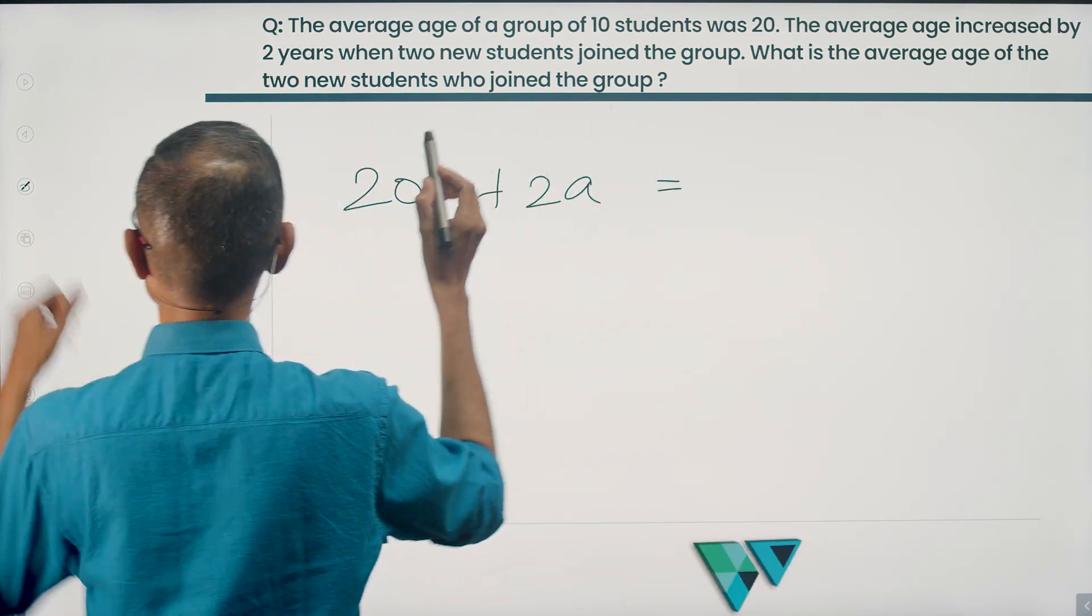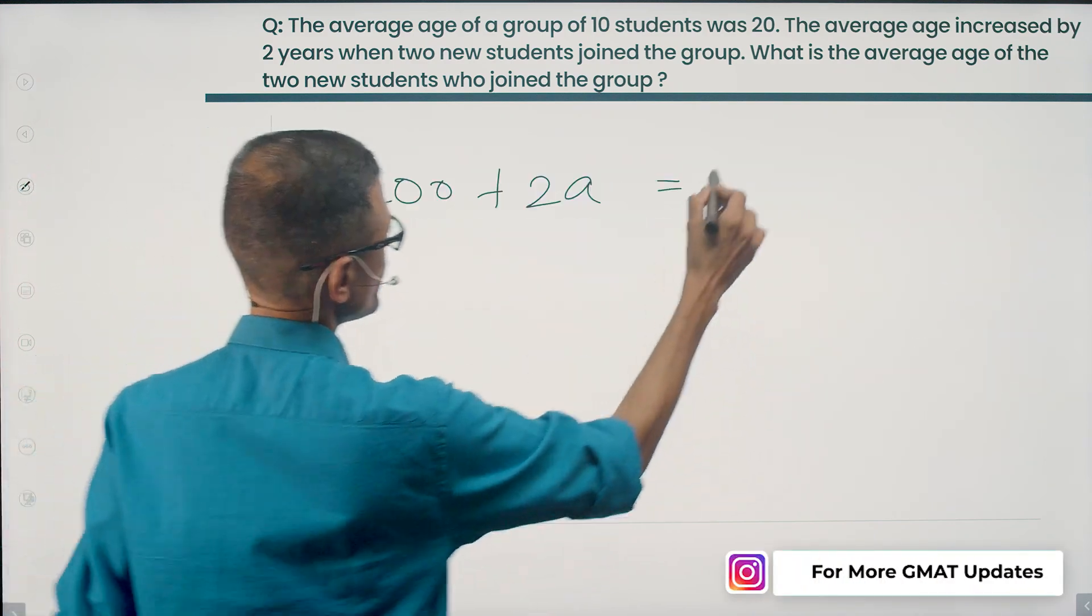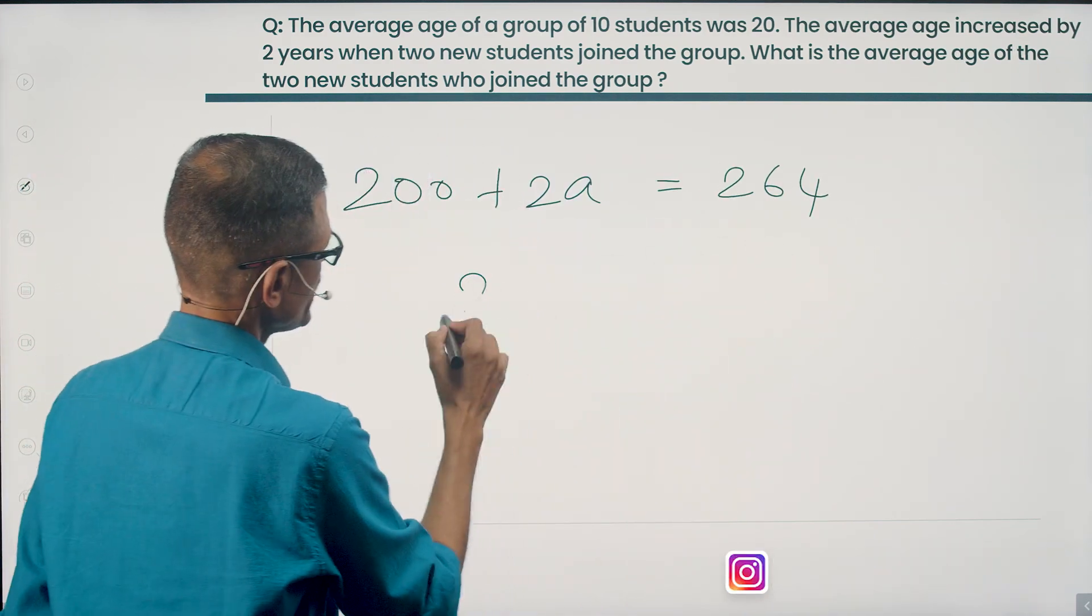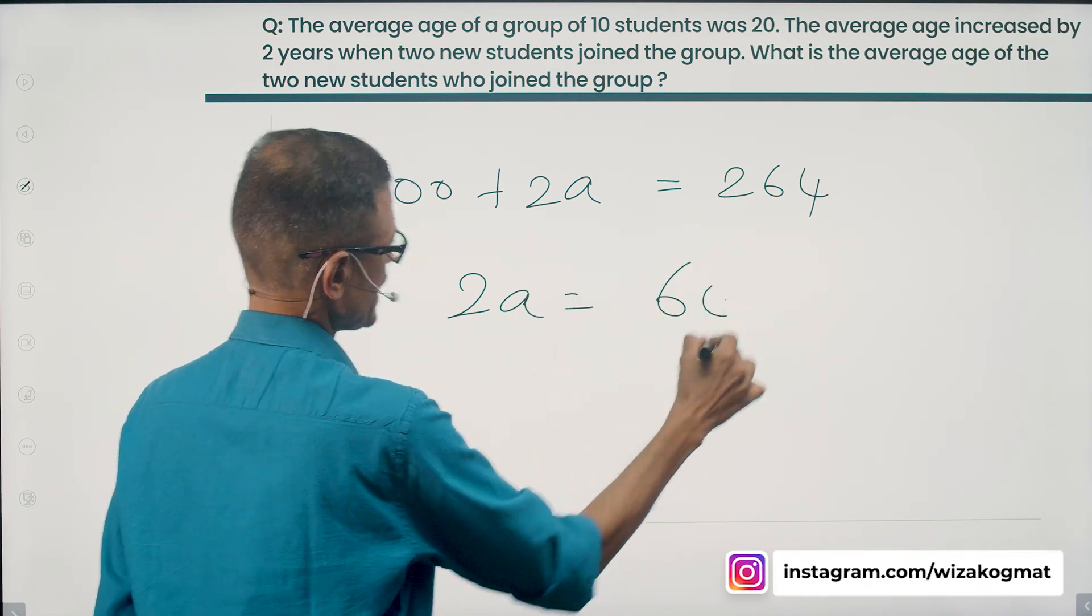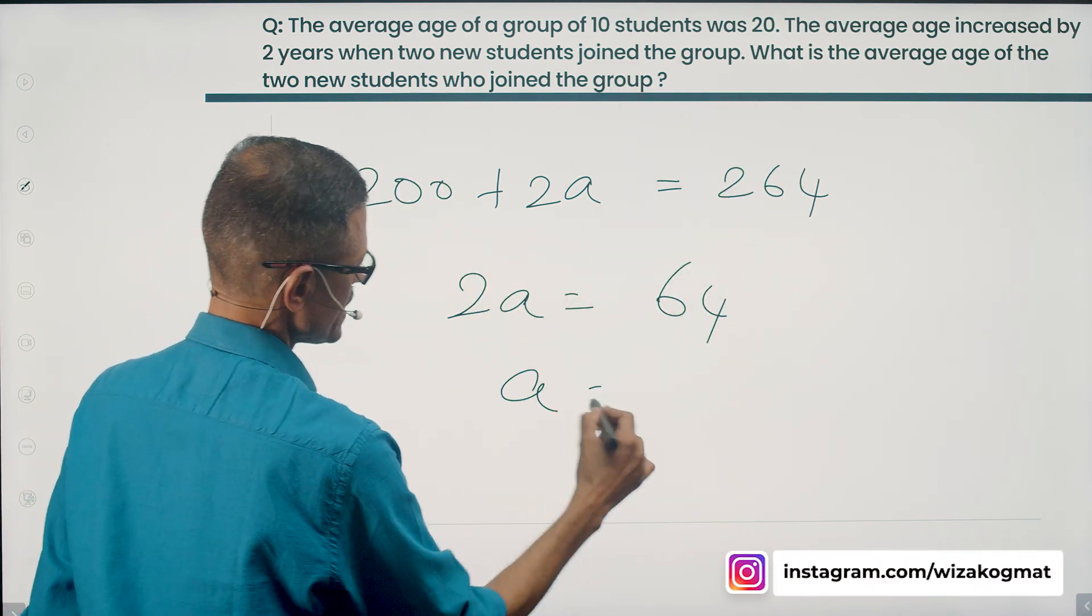So 200 plus 2a is the sum of the ages of the initial 10 plus the two new students. Which computed as a product of the new number and new average works out to 264. So 2a is equal to 64. Taking this 200 to the other side. So a is equal to 32.